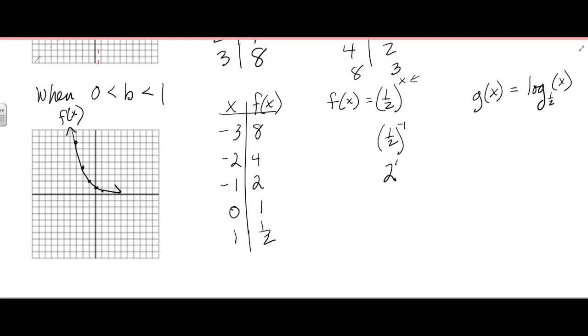Well, then we would just switch all of those ordered pairs. So we'd have x, g of x. And then we'd have the 8, negative 3. We'd have the 4, negative 2, 2, negative 1, 1, 0. And then 1 half, 1.